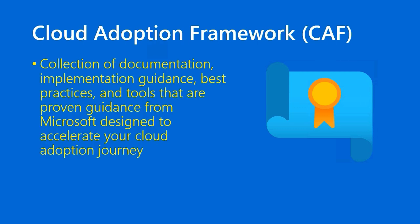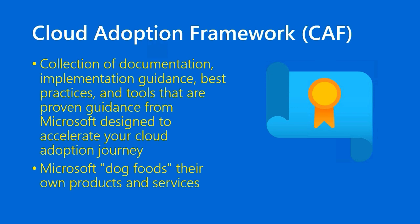The Cloud Adoption Framework, or CAF, is a collection of proven practices all about the cloud journey — migration to the cloud and ultimately working in the cloud. These proven practices were developed over years by Microsoft partners who contributed their experience as cloud solution architects and providers, as well as Microsoft's own fleet of cloud solution architects. All of that experience has been distilled into this framework and it's freely available. Microsoft also dogfoods their own software, running their own services on Azure and subscribing to the CAF themselves when deploying their own cloud infrastructure internally.